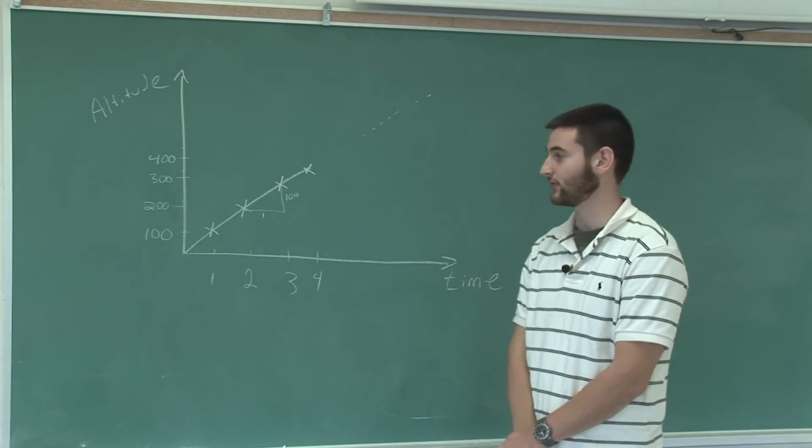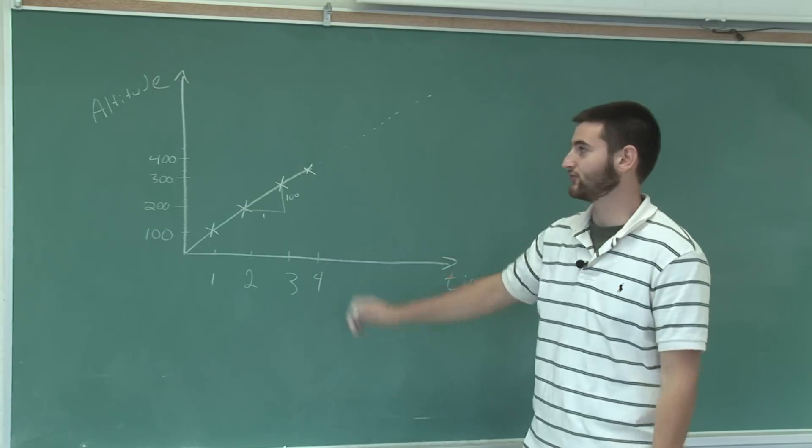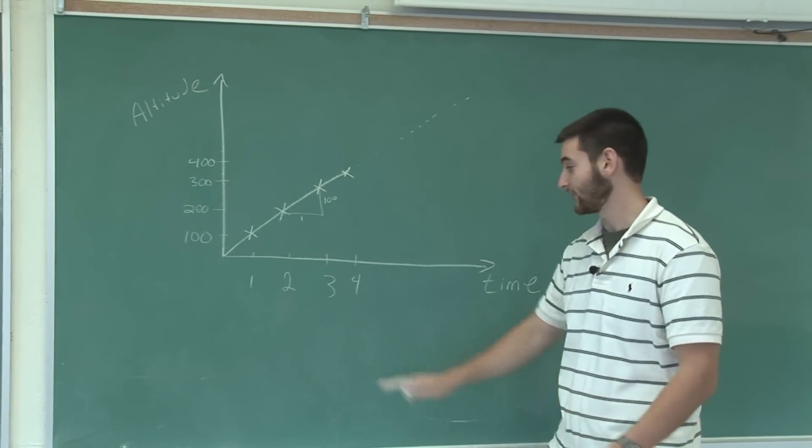Okay, here I'm going to show you how to make predictions with a graph. Let's just say that this graph represents the altitude of a rocket as a function of time.